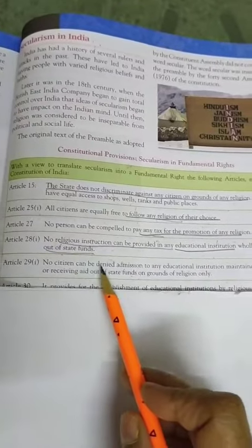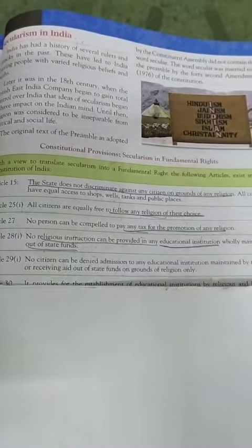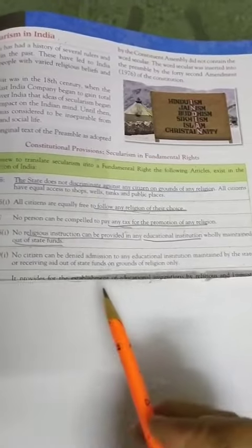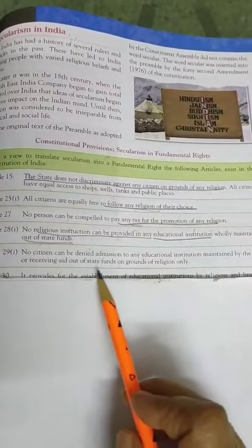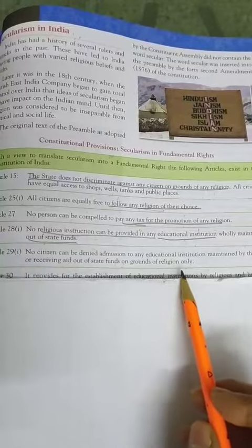Article 29: First, no citizen can be denied admission to any educational institutions maintained by the state or receiving aid out of state funds on ground of religion only.